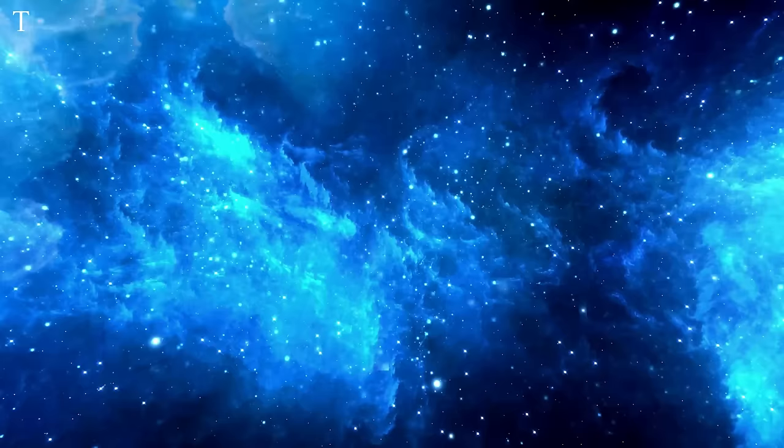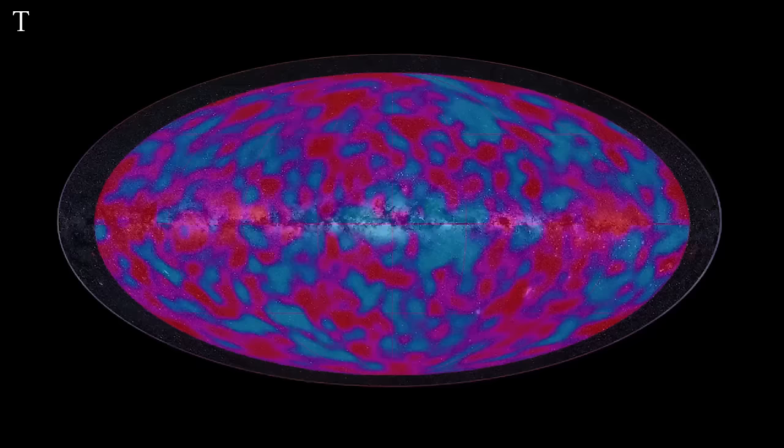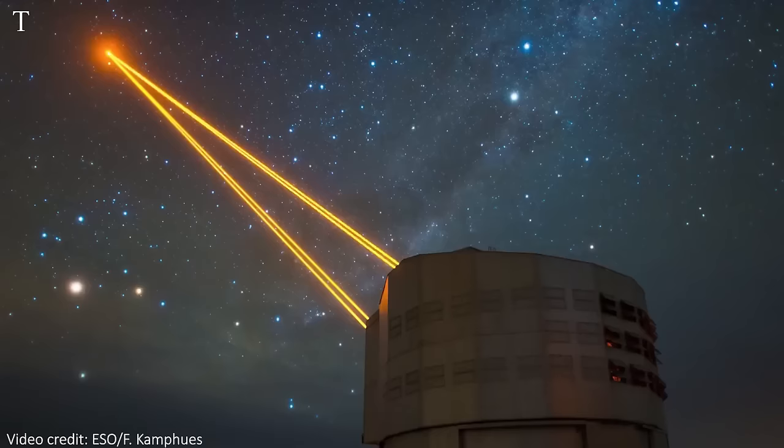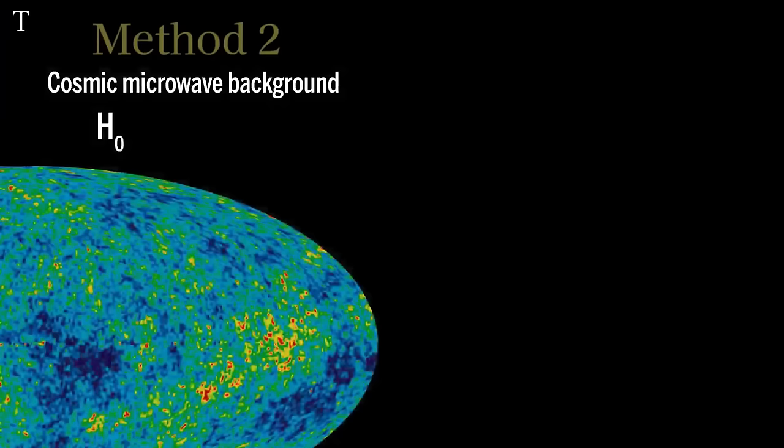Two, cosmic afterglow. Another way is to look back in time to the very beginning of the universe, like rewinding a movie. Scientists can study the afterglow of the Big Bang, which is like the echo of the universe's birth. By examining this afterglow, they can calculate the Hubble constant based on the early conditions of the universe. The problem is, when scientists use these two methods separately, they get different results for the Hubble constant. This is called the Hubble tension, and scientists are trying to figure out why these methods don't agree.